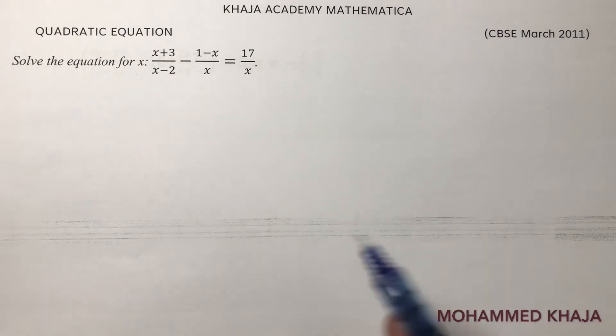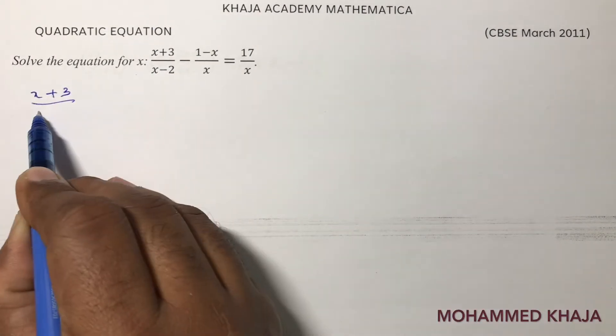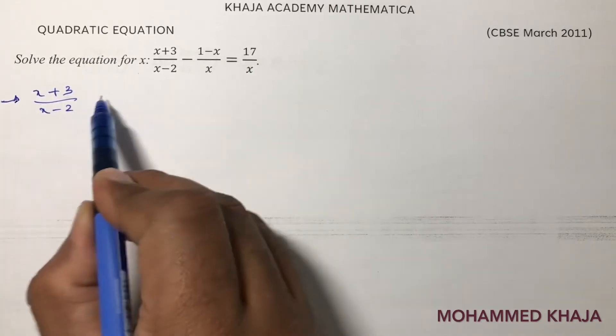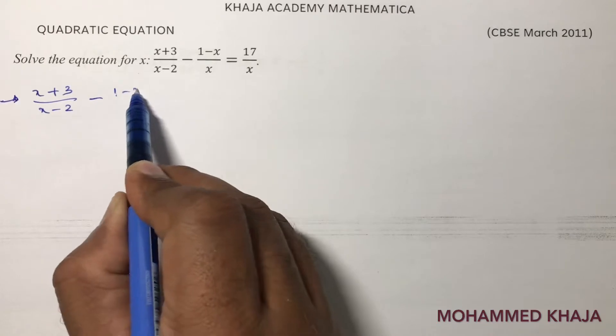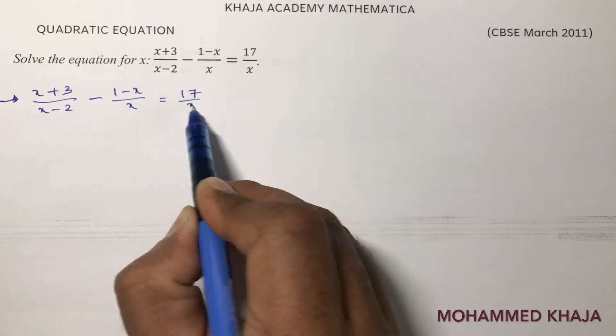Solve the equation for x: x plus 3 by x minus 2 minus 1 minus x by x equals 17 by x.